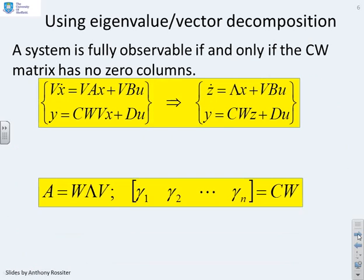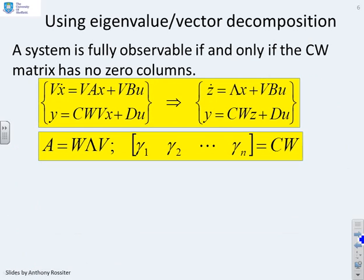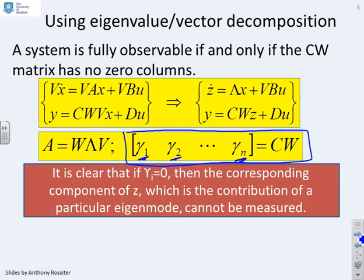So there's the decomposition again. And what I've done is I've now shown that cw can be written as a whole series of columns. Column gamma 1, column gamma 2, all the way up to column gamma n. And the key point is that if any of those columns are zero, then the corresponding component of z, which is the contribution of a particular eigenmode, cannot be measured.